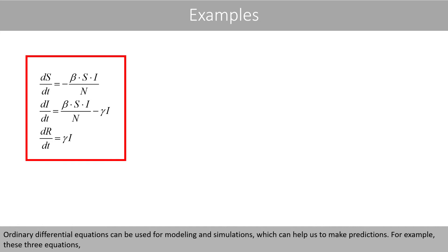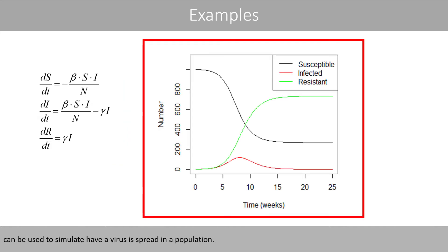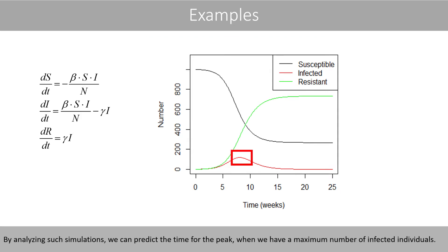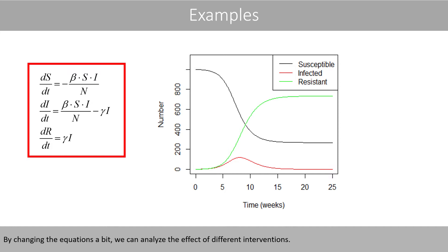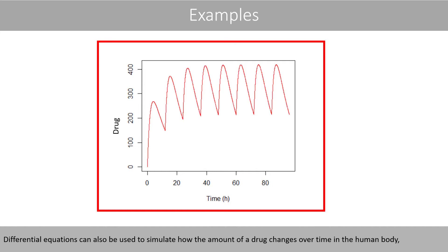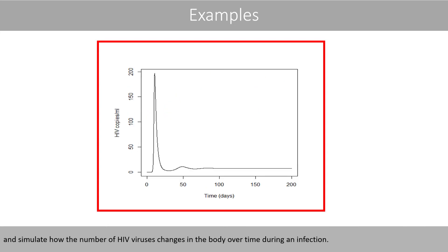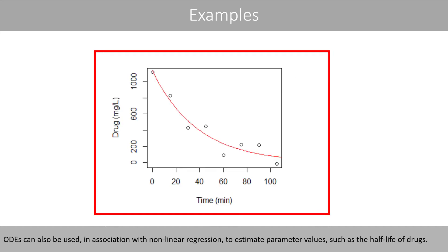Ordinary differential equations can be used for modeling and simulations, which can help us to make predictions. For example, these three equations can be used to simulate how a virus is spread in a population. By analyzing such simulations, we can predict the time for the peak, where we have a maximum number of infected individuals. By changing the equations a bit, we can analyze the effect of different interventions. Differential equations can also be used to simulate how the amount of a drug changes over time in the human body, and simulate how the number of HIV viruses changes in the body over time during an infection.